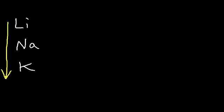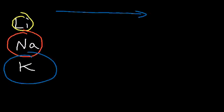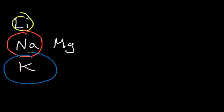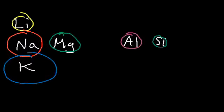Now let's put this all together. For atoms, size increases going down the periodic table: lithium is relatively small, sodium is bigger, and potassium is even bigger. As you go to the right — sodium, magnesium, aluminum, silicon — atomic size decreases. So atomic size increases going down and decreases going to the right.